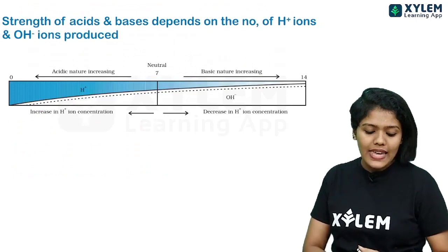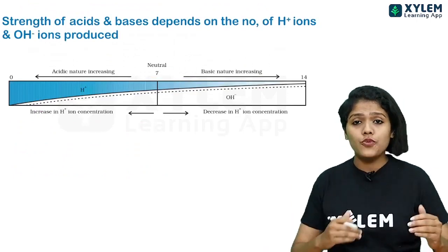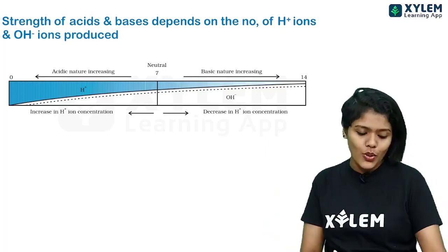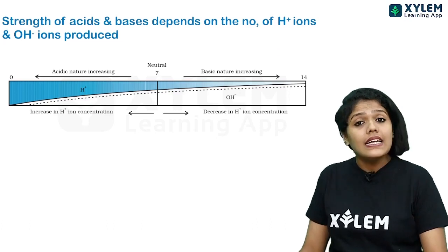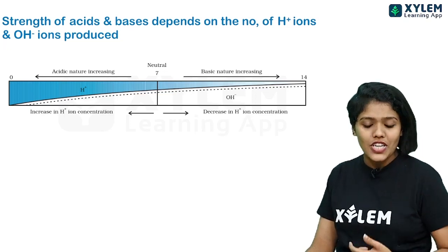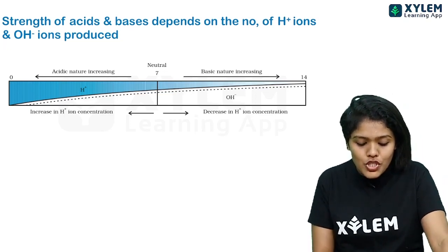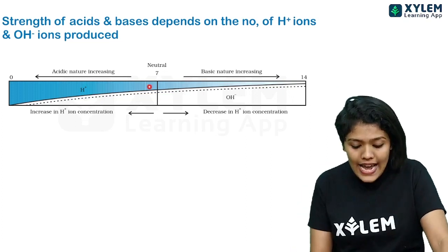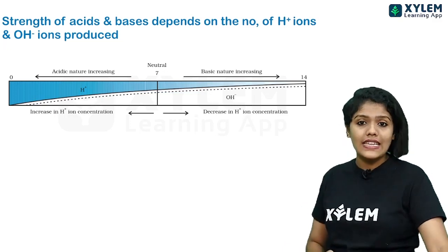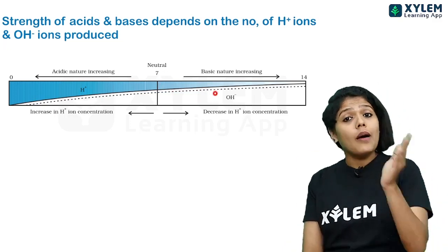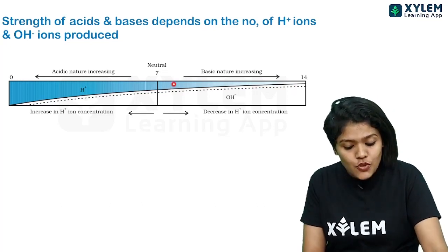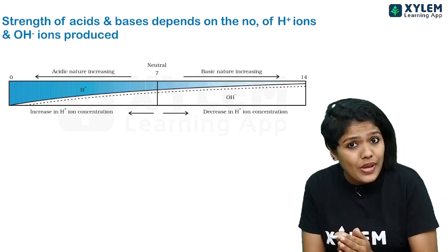We can represent the H+ ion concentration on the pH scale. The strength of acids and bases depends upon the H+ ion concentration and OH− ion concentration. When H+ ion concentration is increasing, it represents the acidic side. When H+ ion concentration is decreasing, we are moving toward the basic side.